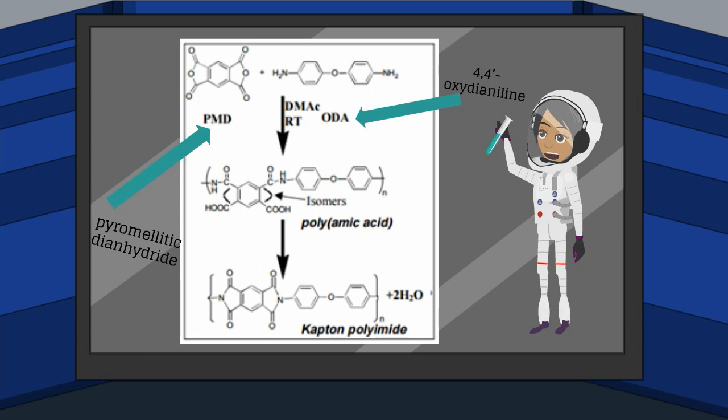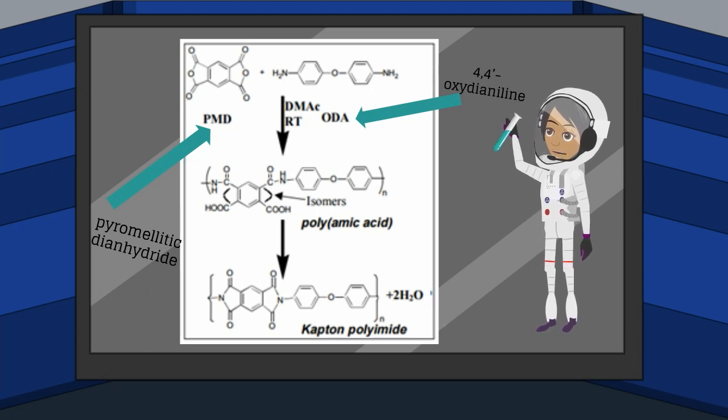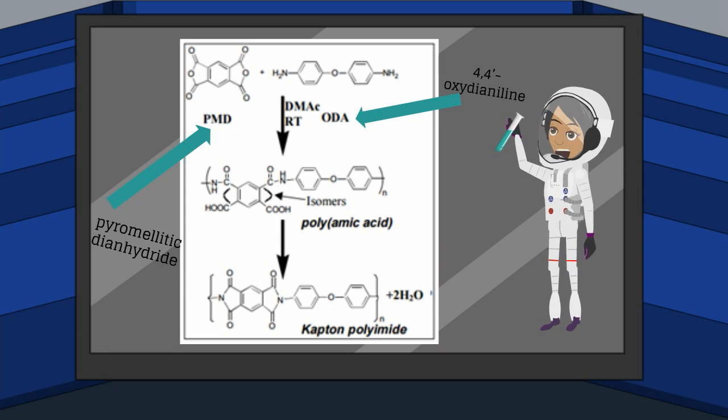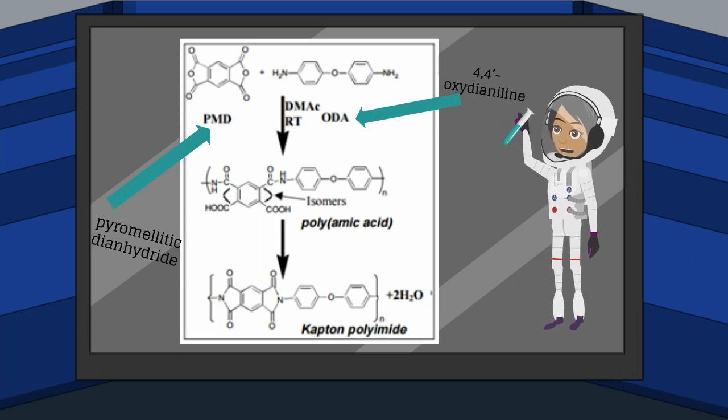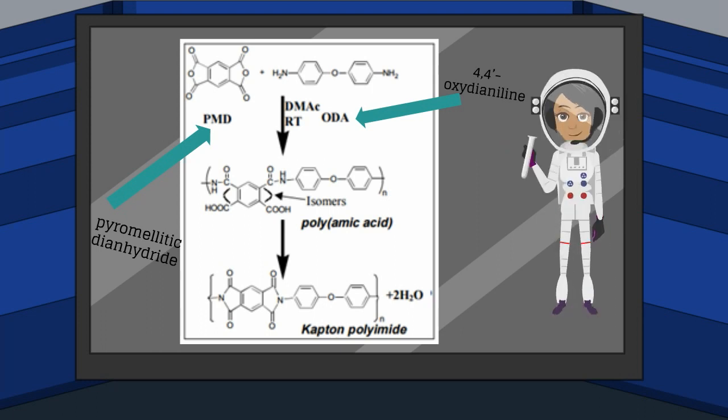Higher concentrations of monomers produces a polyamide with a higher molecular weight. The molecular weight affects the density and tensile strength of the polyamide so the choice of monomer and its concentration can significantly alter the properties of the Capton sheet. This relationship is important because Capton needs to have a high tensile strength while also having a low density to reduce the amount of force needed to accelerate the solar sail.